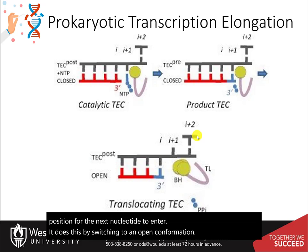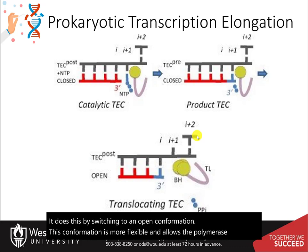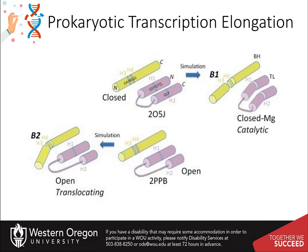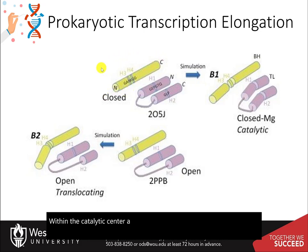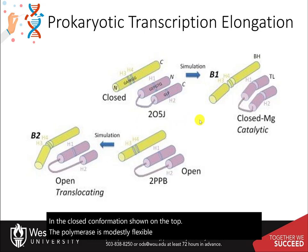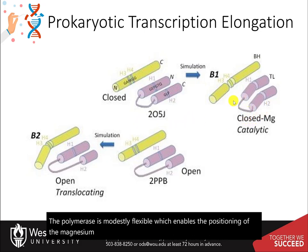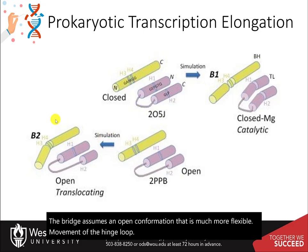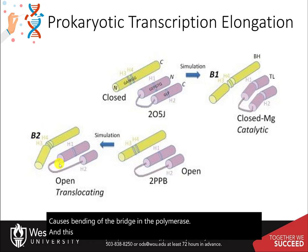The open conformation is more flexible and allows the polymerase to essentially pull itself along the DNA template, one nucleotide at a time. Within the catalytic center, a bridge region, shown in yellow, and a hinged loop region, shown in pink, are required for catalysis and translocation. In the closed conformation, shown on the top, the polymerase is modestly flexible, which enables the positioning of the magnesium close to the catalytic center to facilitate nucleotide addition. Following nucleotide addition, the bridge assumes an open conformation that is much more flexible. Movement of the hinge loop causes bending of the bridge in the polymerase, and this enables it to shift down on the DNA template.